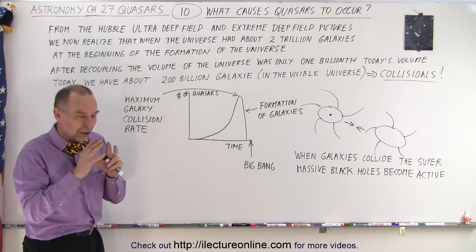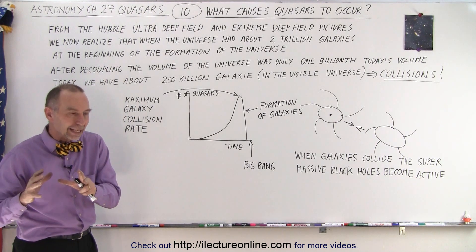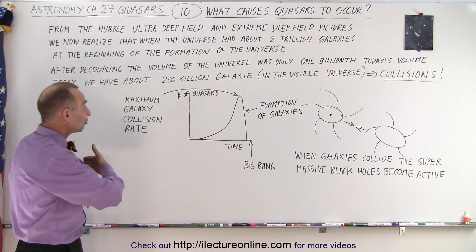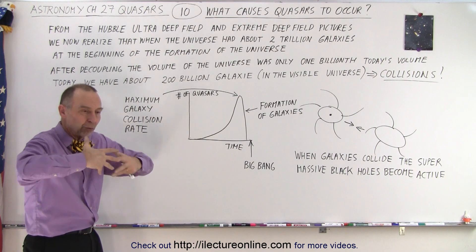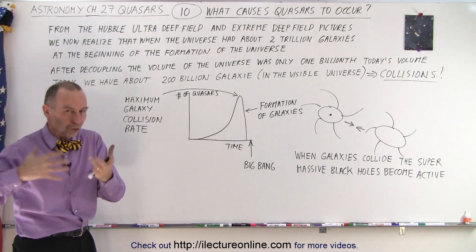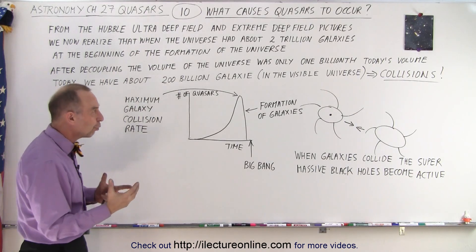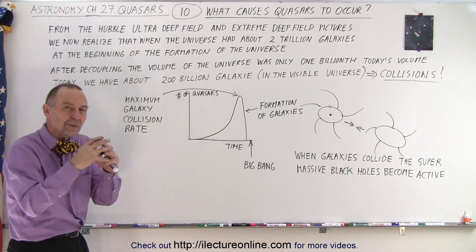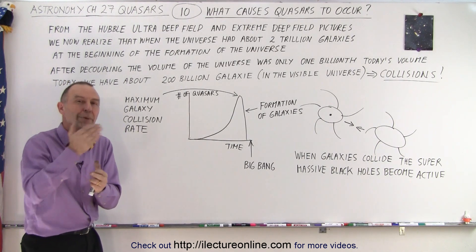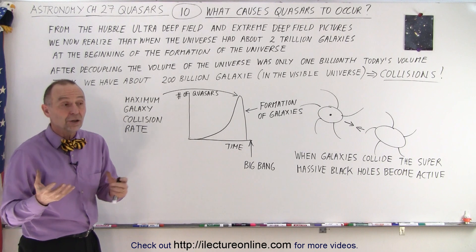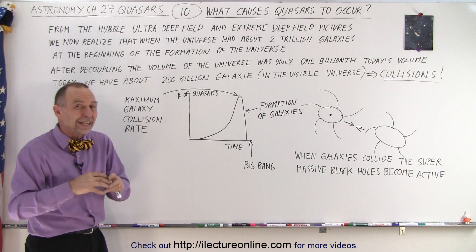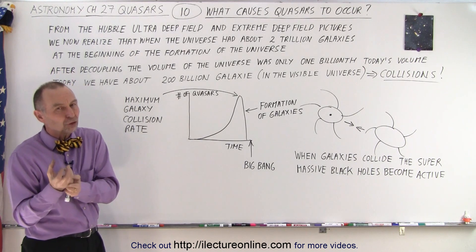When we think about what the universe was like at the beginning, it was a lot smaller in volume. Right after what we call decoupling — when radiation was free to flow throughout the universe and there were no stars and no galaxies — when stars began to form, the universe was extremely small compared to today. The volume of the universe back then was only about one-billionth the volume of today, so everything was much closer together and galaxies were much closer and much smaller.